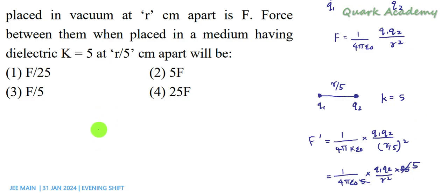So F dash equal to 5 times 1 by 4π epsilon 0, q1q2 by r squared. Now 1 by 4π epsilon 0, q1q2 by r squared is F. So F dash equal to 5 times F.